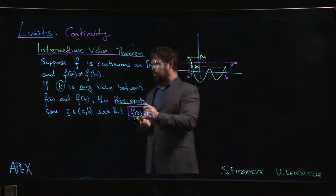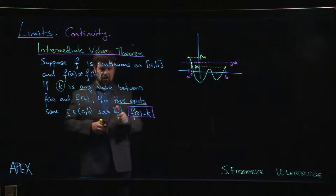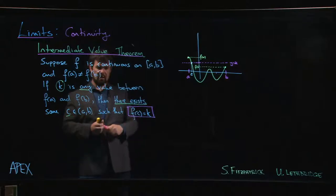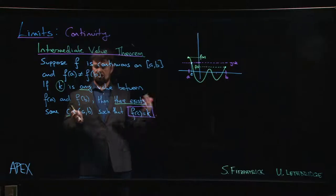There might be only one, but there has to be at least one. That's what the Intermediate Value Theorem guarantees. When it says "there exists some C," there is at least one. There might be more, but we don't know. All we know is there's at least one.